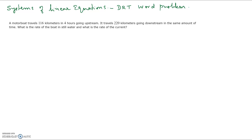In this video I will be showing you one of the questions asked by one of your classmates based on systems of linear equations, which is a word problem on distance, rate, and time. A motorboat travels 116 kilometers in four hours going upstream. It travels 220 kilometers going downstream in the same amount of time. What is the rate of the boat in still water and what is the rate of the current?